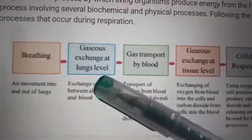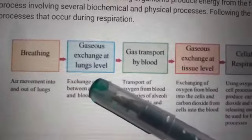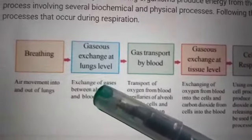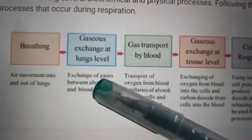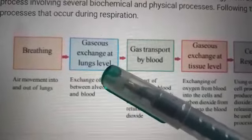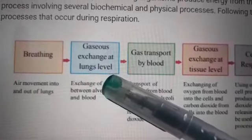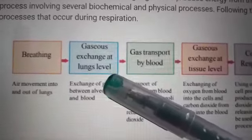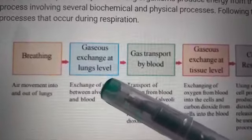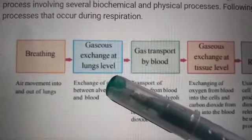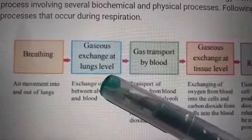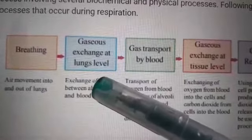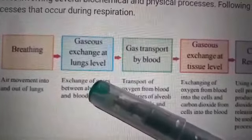The second step is gaseous exchange at lungs level. The atmospheric air, which includes oxygen, enters the lungs through inhalation. The functional units of the lungs are called alveoli. Each alveolus is surrounded by a blood capillary network. The carbon dioxide-rich blood is present in the capillary network, and the alveolus carries oxygen. Near the alveolus, the exchange of gases from the lung alveolus to the blood takes place.